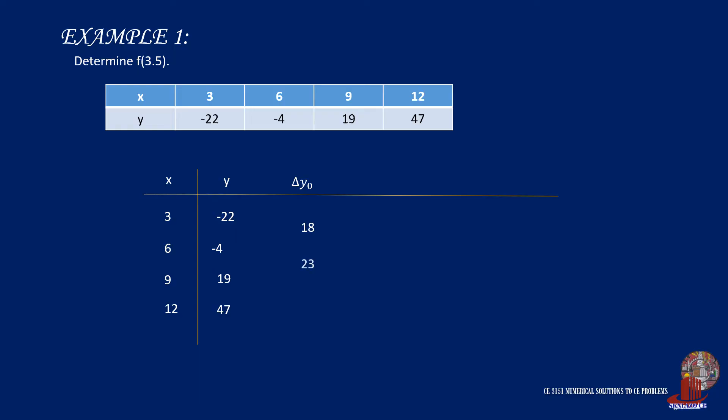19 minus -4 is 23, and 47 less 19 is 28. Since there isn't any pattern for the first delta, move to the second degree delta. 23 less 18 is 5, and 28 minus 23 is 5. With the same values for delta squared y, we can proceed to the formula.